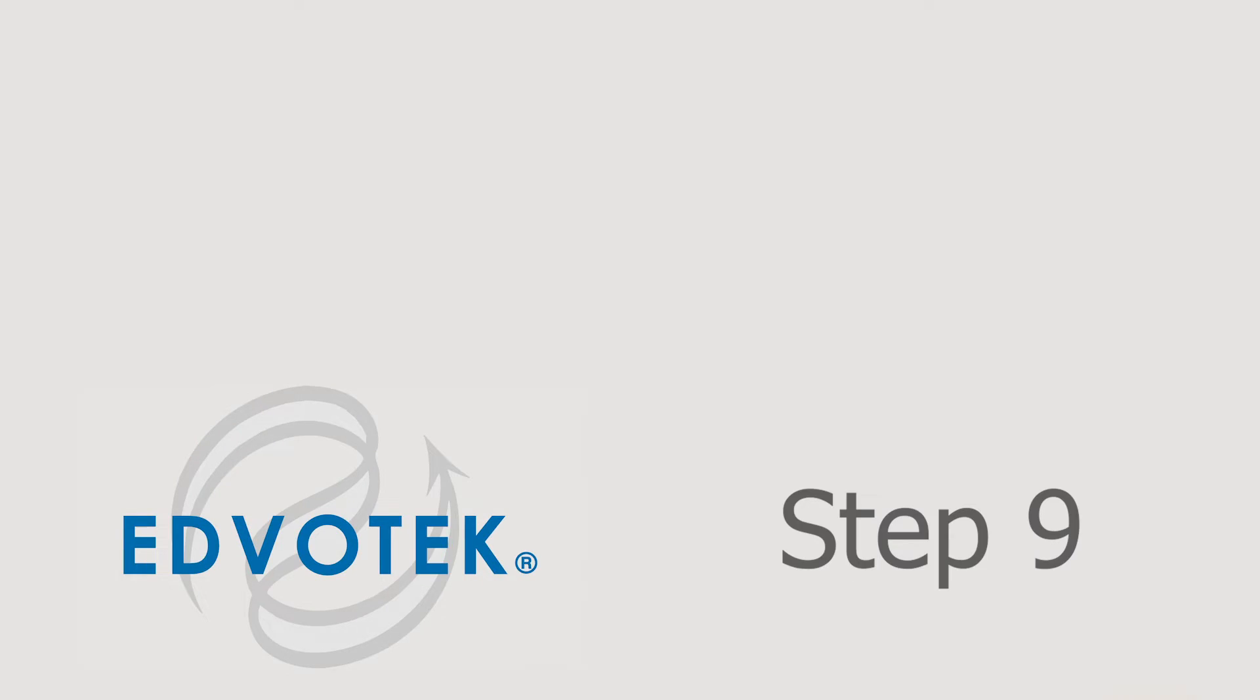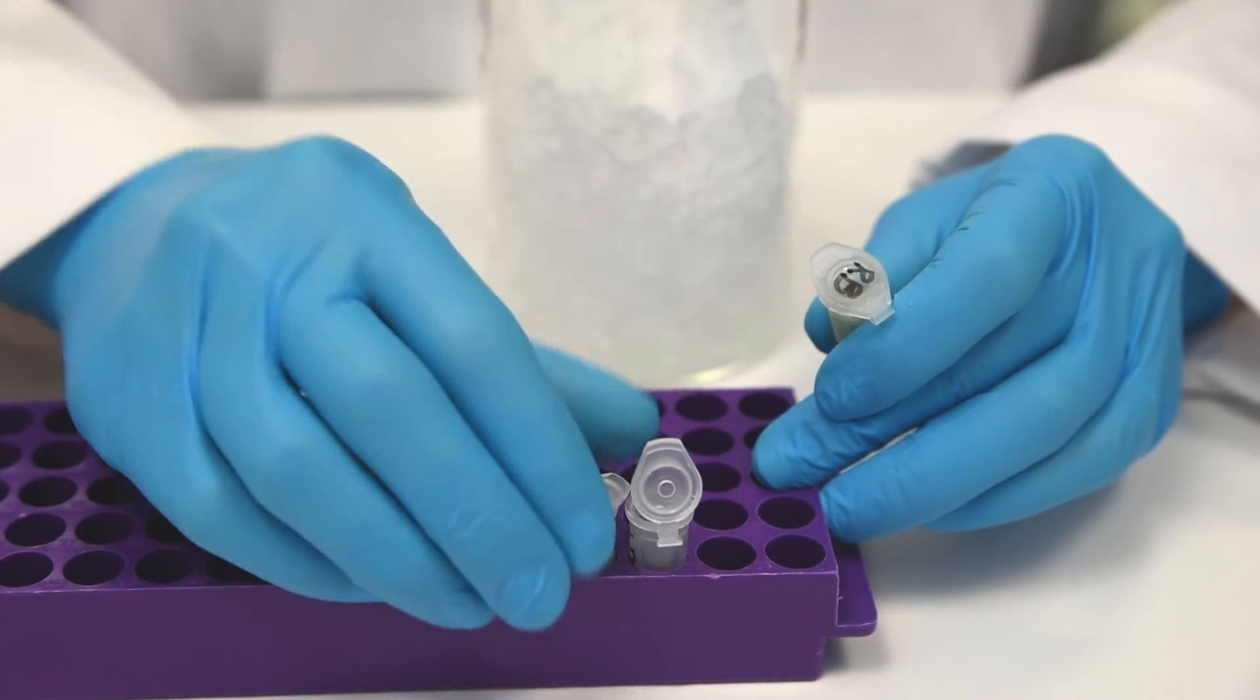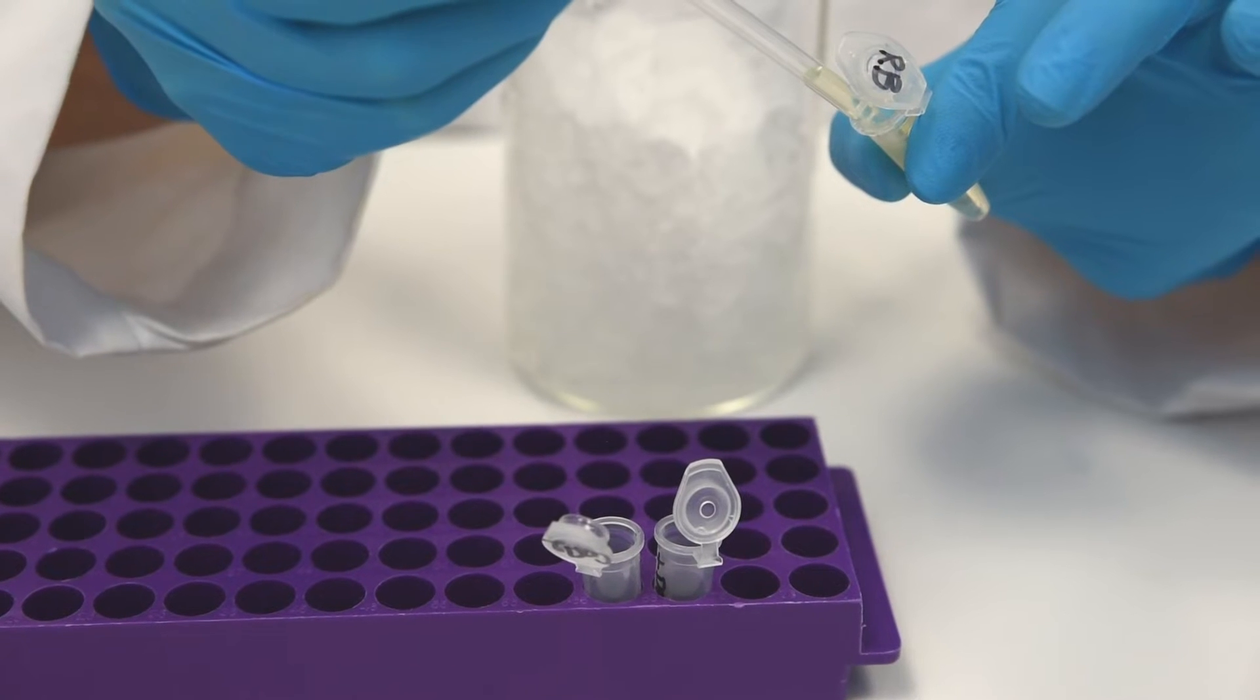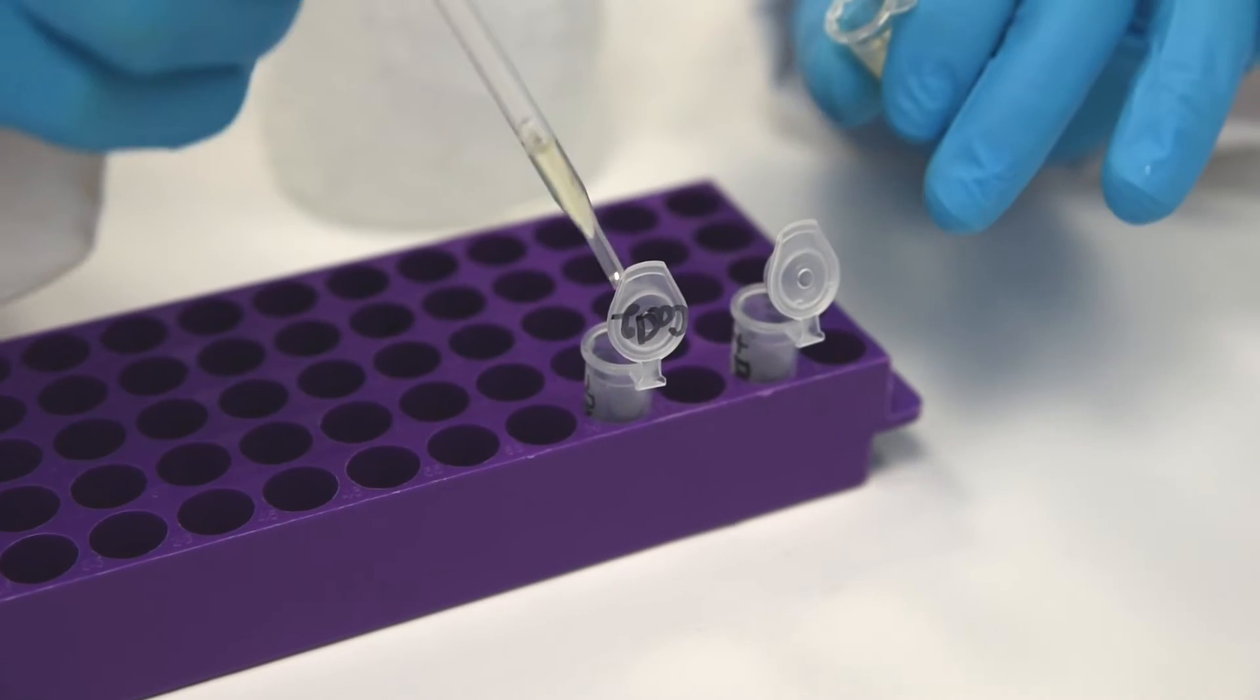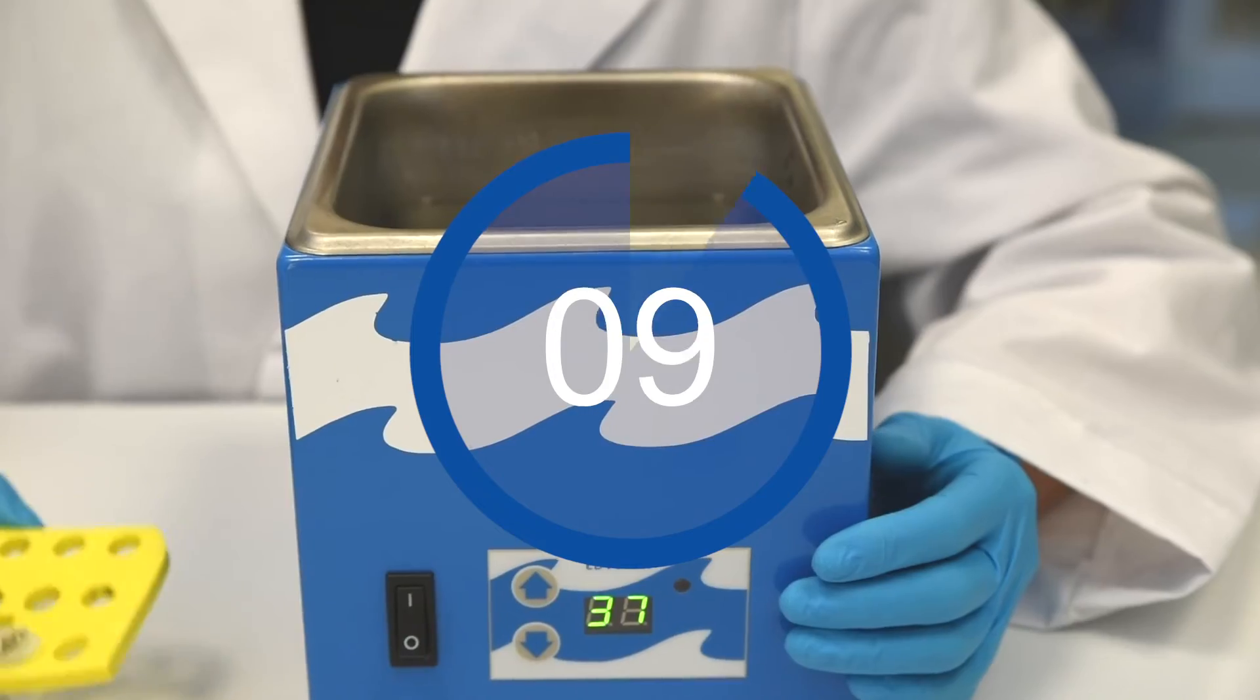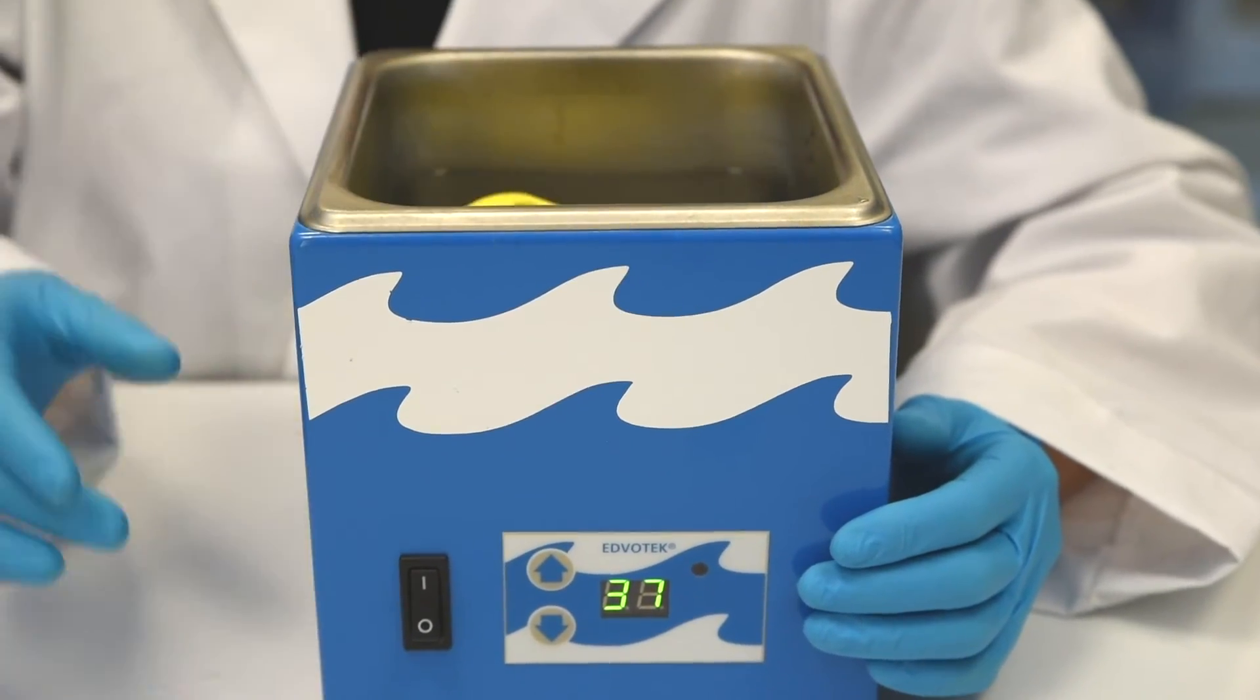Step 9. Carefully transfer 250 microliters of recovery broth to each tube using a sterile pipette. Gently mix by flicking the tubes. Step 10. Incubate the cells for 10 minutes in a 37 degrees Celsius water bath.